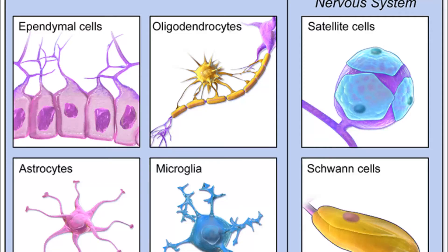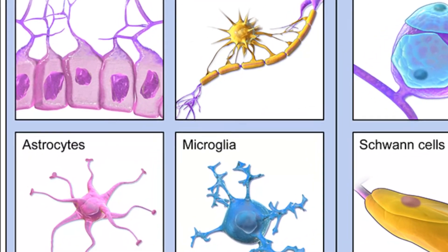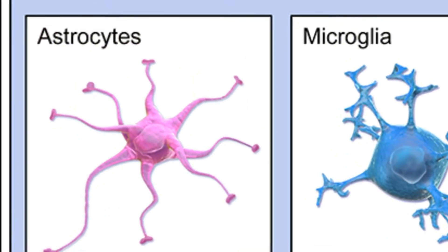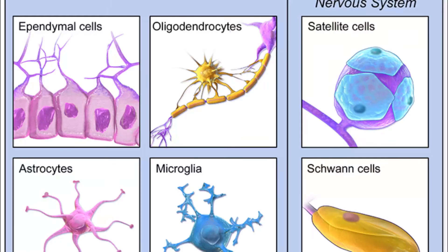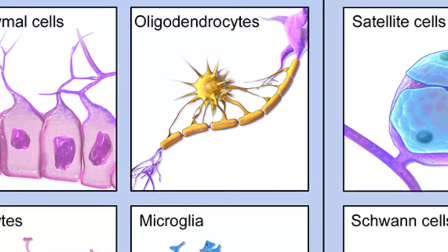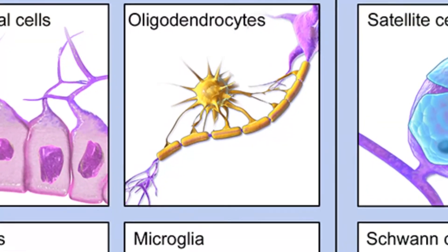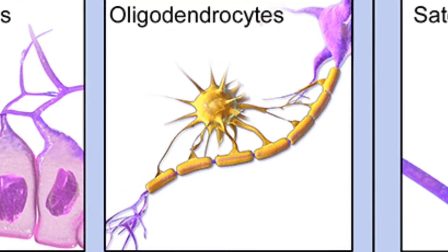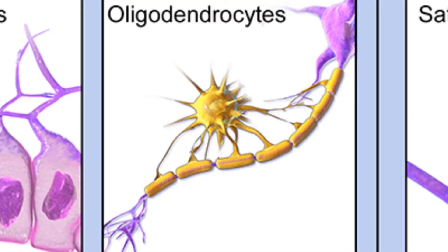Let me show you the types of cells in the nervous system. You've got the astrocytes, which are the supporting cells, and you've got the oligodendrocytes, which act as an attachment or help in the formation of myelin sheaths in the neurons.